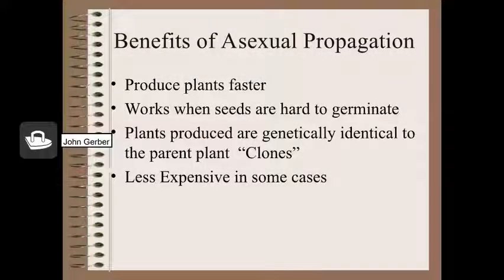Asexual propagation allows gardeners to produce plants faster, especially in cases where seeds are difficult to germinate. One of the most important benefits of asexual propagation is that plants produced are genetically identical to the parent plant — therefore they have the same traits as the parent. This type of plant is known as a clone. In some cases it can also be more economical to produce plants asexually rather than through seeds.